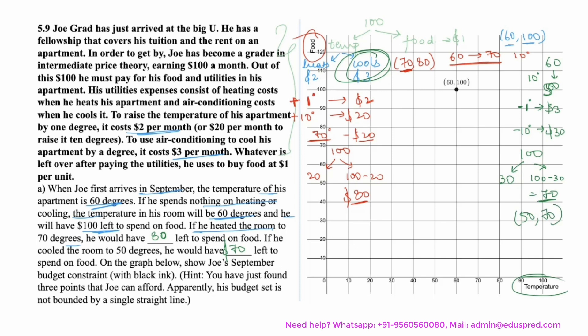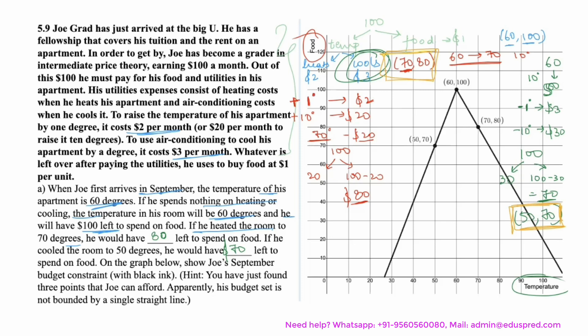Now we have three points: (60, 100), (70, 80), and (50, 70). Plotting these — point (70, 80) lies here and point (50, 70) lies here. Joining these three points, you can easily get the budget line. Note that the budget line in this scenario is not a straight line but an inverted V shape.